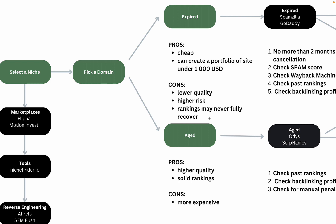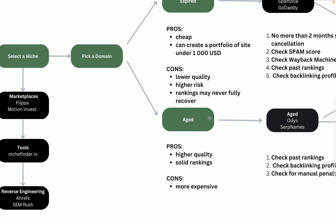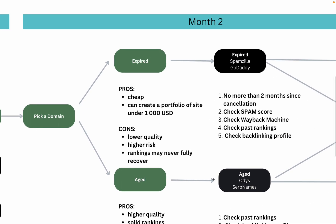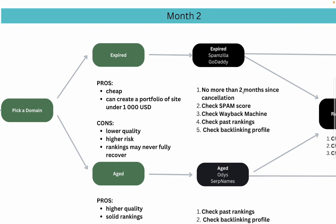Then you have aged domains. The pros are quite self-explanatory — they are high quality and have solid rankings. The main con is that they are more expensive. To find expired domains you can go to SpamZilla, which is an amazing tool allowing you to look at a domain from different angles. It links to Ahrefs, gives you the Moz domain rating, the spam score, and links to the Wayback Machine so you can check how the website looked. Alternatively, GoDaddy auctions offer domains of higher quality, though more expensive.